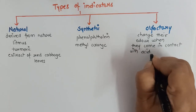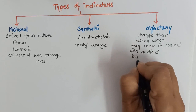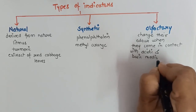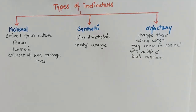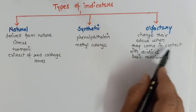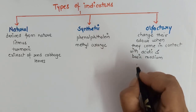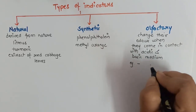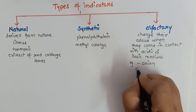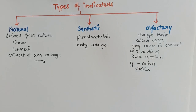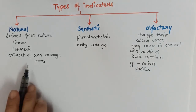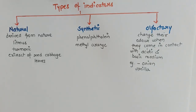Chemistry is all about colors and odors. We will be studying many gases with particular smells and substances with particular colors. Olfactory indicators change their odor when they come in contact with acidic or basic medium. For example, onion and vanilla essence. Now let us see how these indicators change their color and help to identify acidic or basic medium.